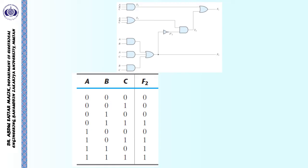Next, we have written the column for F2. We already know that F2 is equal to AB plus AC plus BC. The AND combination of AB, AC and BC going to an OR gate gives F2. So F2 will be equal to 1 if either A and B are 1, or A and C are 1, or B and C are 1. We can identify that B and C are equal to 1 here, A and C are equal to 1 here, and A and B are equal to 1 here. Thus F2 is 1 for 4 different combinations.